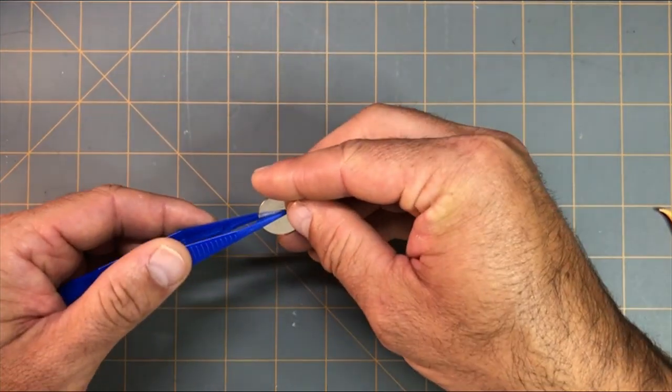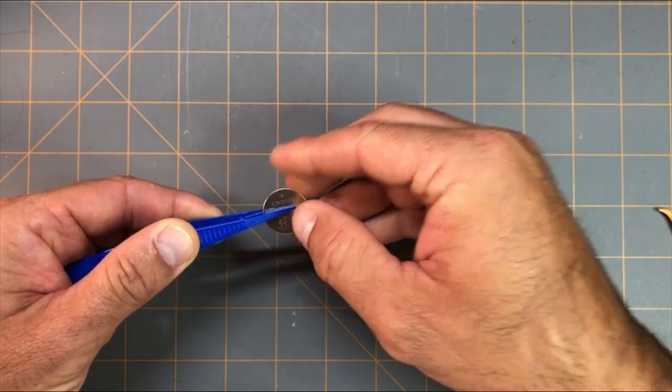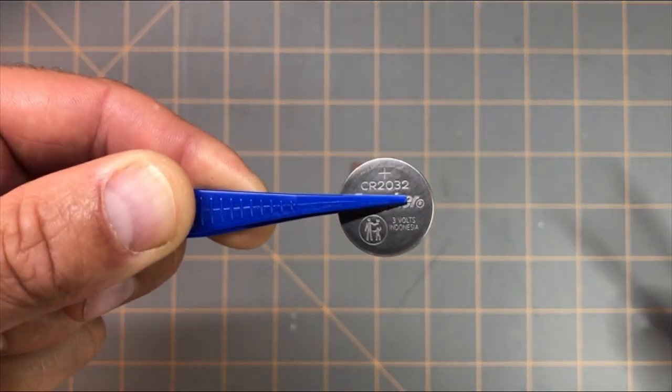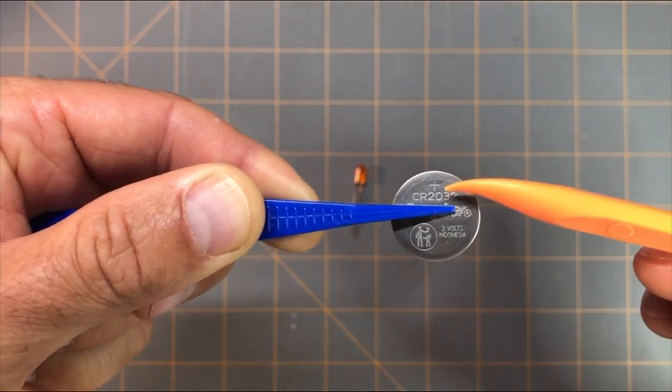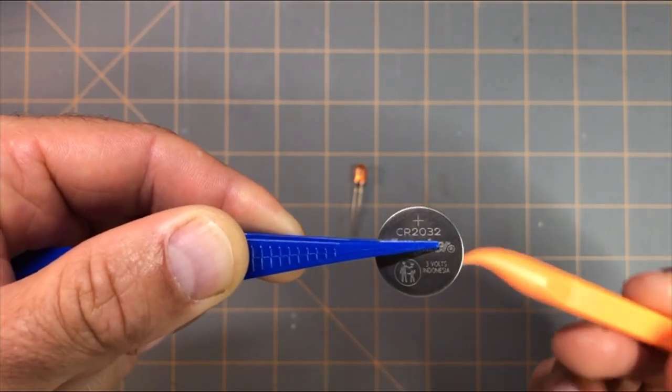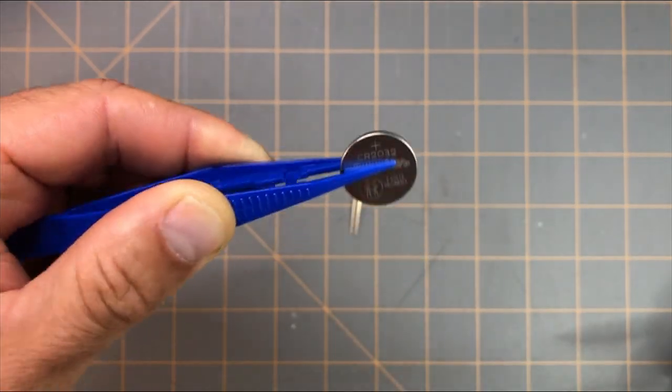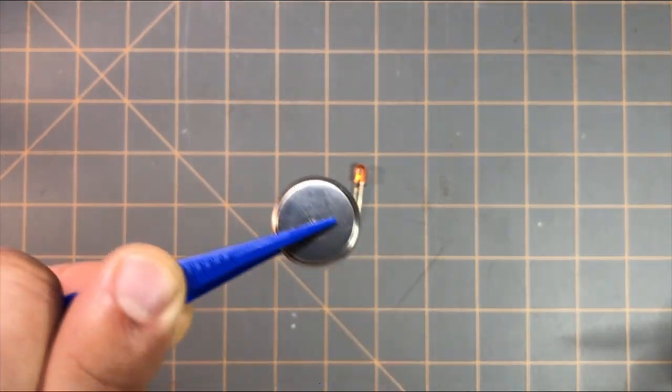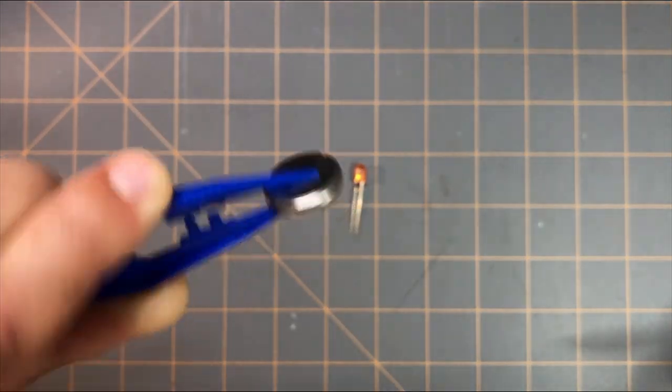If I show you a closer view of the coin cell battery, you can see that this side is the positive side. We can see a little plus sign there. And the other side is the negative side, which doesn't really have anything on it.